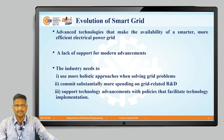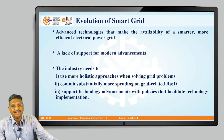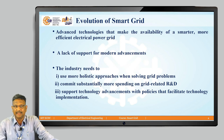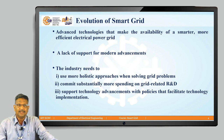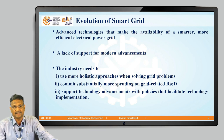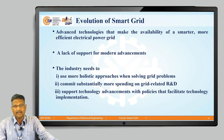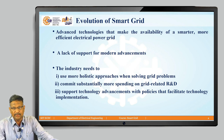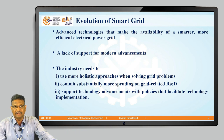What the industry needs is more holistic operations when solving grid problems. In holistic operation, there should be something in the hands of consumers — awareness to the consumer — then commitment to sustainability, more spending on grid-related research and development, and support for technology advancement with policies that facilitate technology implementation.